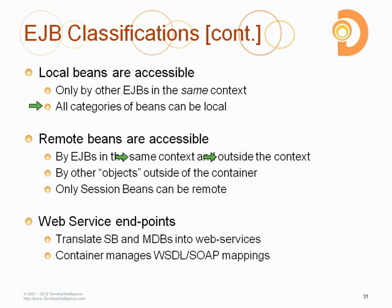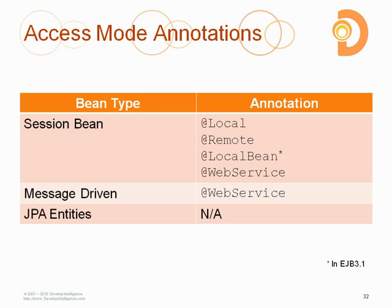All deconstruction of XML into Java objects is handled automatically with web service endpoints, so you just focus on creating the EJB itself. Session beans have access to the full gamut of access modes — local, remote, and web service. The local no-interface bean, marked with a star, is only available in EJB 3.1 and allows creating a local session bean without developing a business interface.